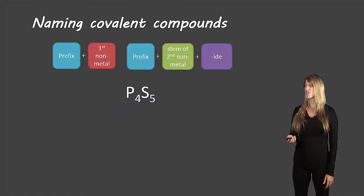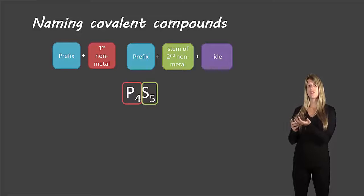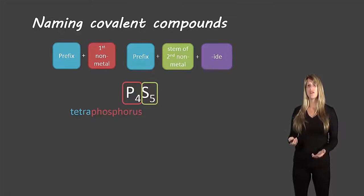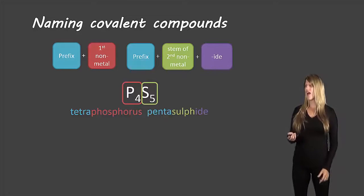Let's look at an example: P4S5. We know that P4 is one part and S5 is another part. P stands for phosphorus and there are four of them; S stands for sulfur and there are five of them. The prefix for four is tetra, so we have tetra-phosphorus. For sulfur, five is penta, and we take the stem 'sulf' and add -IDE, giving pentasulfide. So the name is tetraphosphorus pentasulfide.